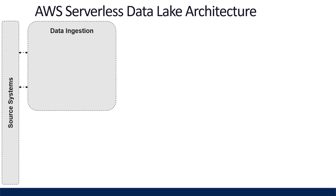The first component of our serverless data lake is data ingestion, which is responsible for bringing our data into the data lake. There are two main categories: batch ingestion and streaming ingestion. Batch ingestion is leveraged when you want to bring in a lot of data at once or on a particular schedule. AWS Glue is a good use case for this — you only pay for the data processing units (DPUs) you use for your job, and you don't have to worry about managing the services after the job is complete.